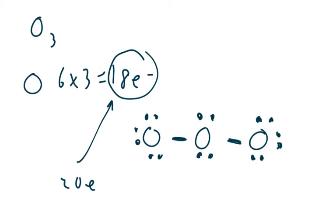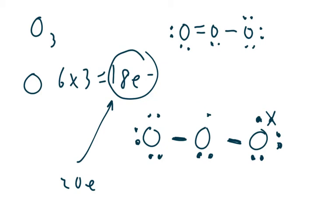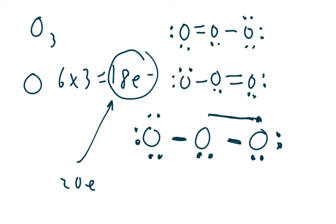Now here's the example of resonance. Let's say we remove one from here and one from here. The two that are left will bond and you will form a double bond on the left side. But we could have easily taken one away from the other oxygen on the other side instead. We're trying to go from 20 to 18 by removing two electrons.